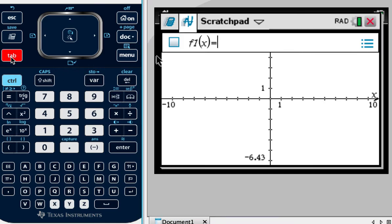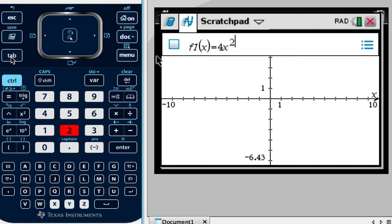So we need to input the first function. And the first function was 4n squared, but here we need to write it as x squared. And then we're going to minus 24x.